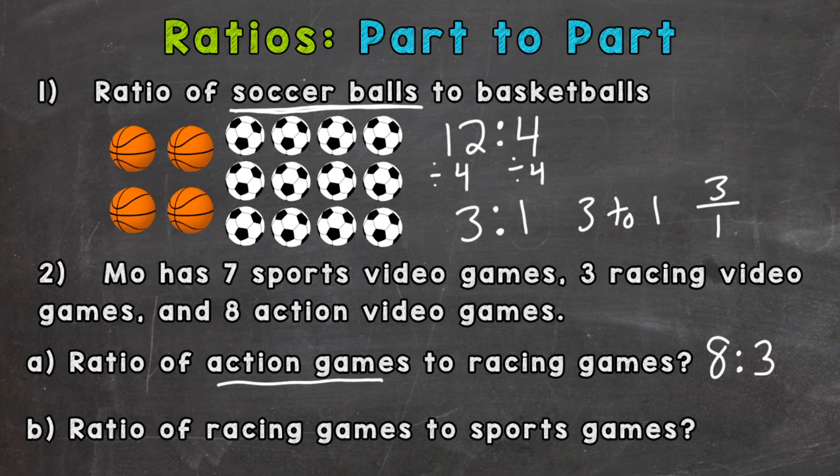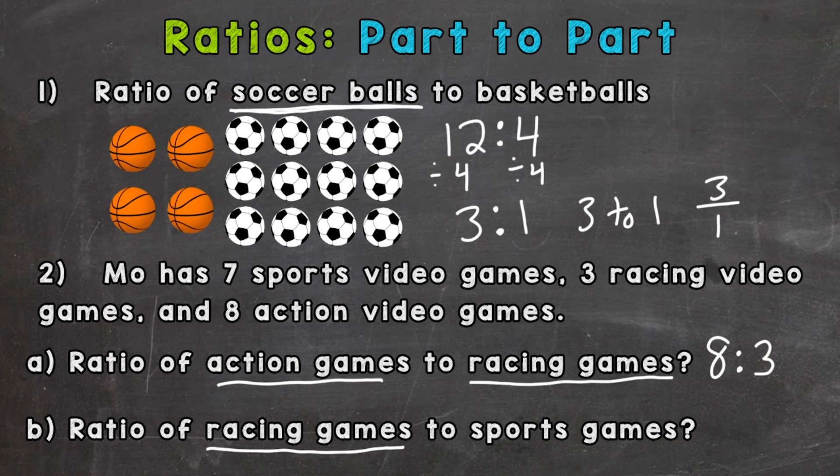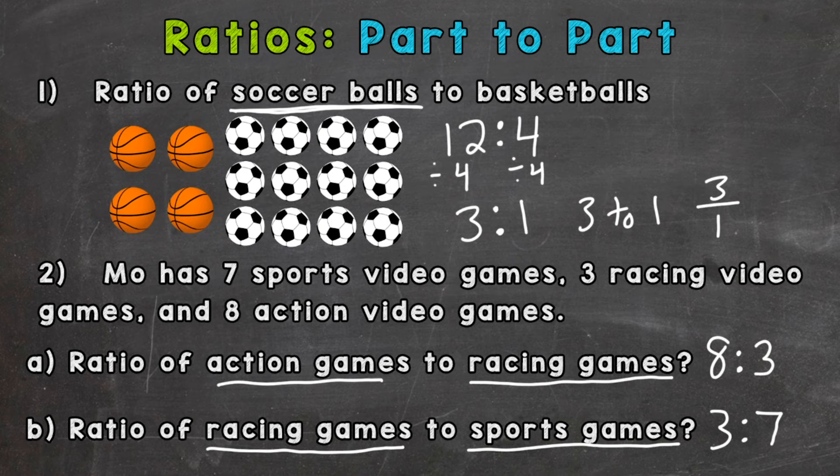So for part B, racing games comes first and the second number is going to be the sports games. So racing games, we have 3 to how many sports games? 7. So 3 to 7. So for every 3 racing games there are 7 sports games.